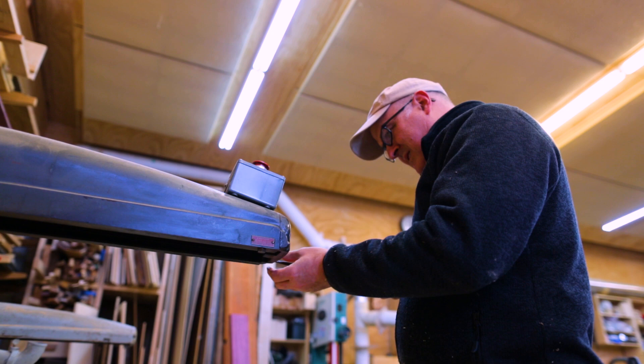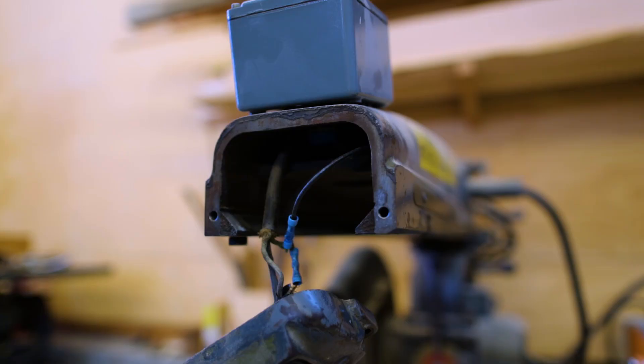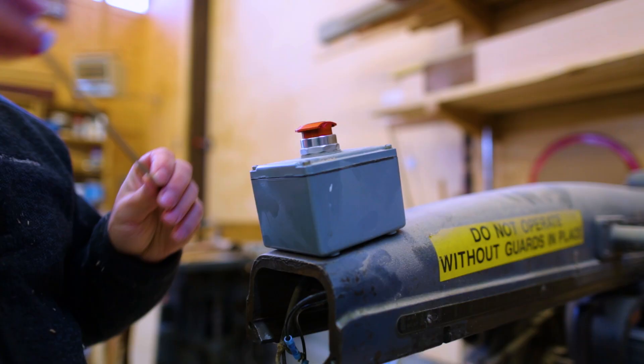Now the last thing I wanted to do is to take the panic switch off of the nose of the big radial arm saw. It just didn't look very good there. So I pulled the wiring apart to figure out what was going on and found that it was actually pretty simple.